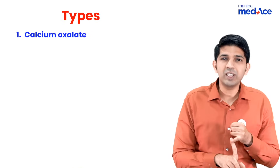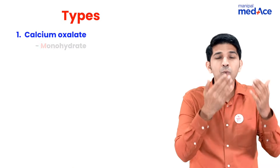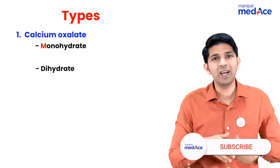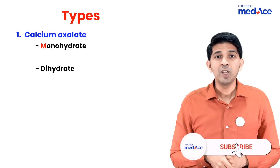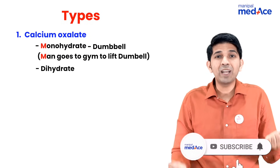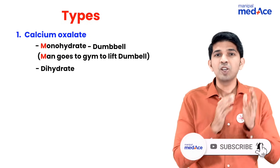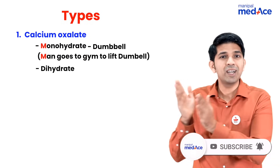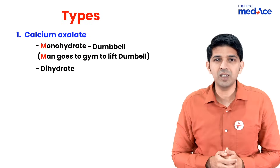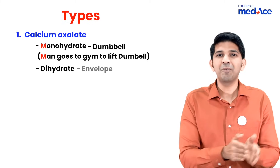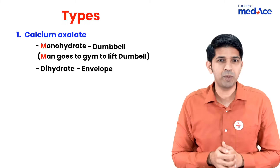In calcium oxalate, you can either have the monohydrate or the dihydrate type. Remember, a man goes to the gym to lift dumbbells — so monohydrate has dumbbell-shaped crystals. Dihydrate will have envelope-shaped crystals.